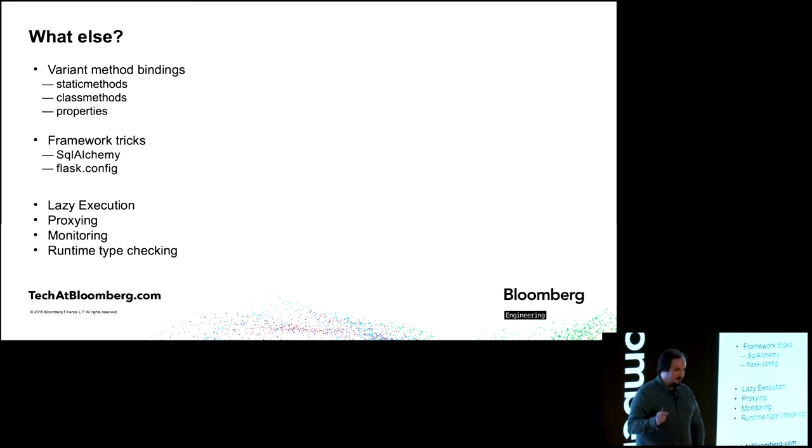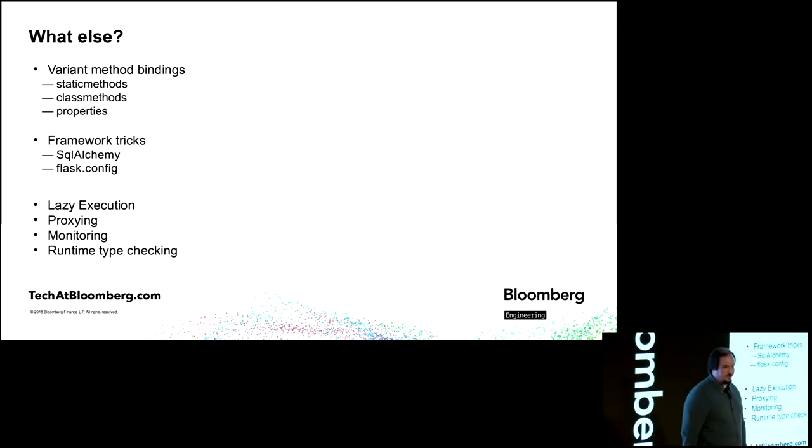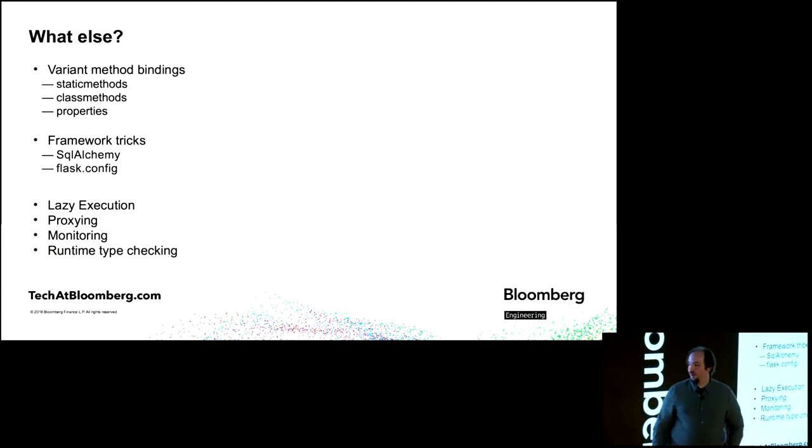This happens every time you access a function from an instance. And this is how it works. So what else? Well, every variant method binding is using this. Static methods, class methods, and properties are all just, let's bind functions differently exactly where we would otherwise. So they just create a different class with a different __get__ that does what it needs to do. Frameworks love to use this. SQLAlchemy does it. It's hidden in the Flask config module. Any framework that you're sitting there going, I'm not quite sure how I would do that without descriptors or metaclasses, is probably using descriptors. It's also useful for lazy execution, proxying, monitoring, runtime type checking is great to do with this. And, of course, many other kinds of behavior things.